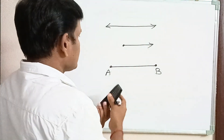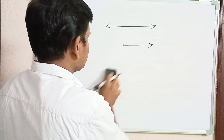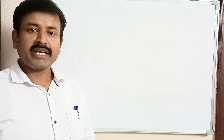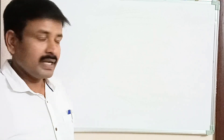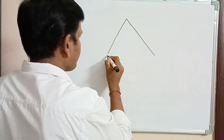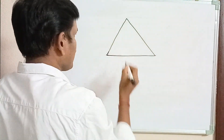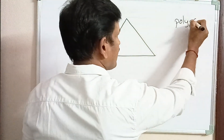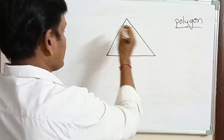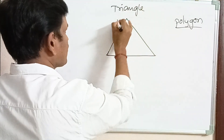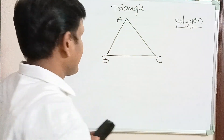Can we form a closed figure using two line segments? No, it is not possible. Can we form a closed figure using three line segments? Yes, it is possible. A closed figure made up of three or more line segments is called a polygon. This three-sided polygon is called a triangle, and the name of this triangle is ABC.